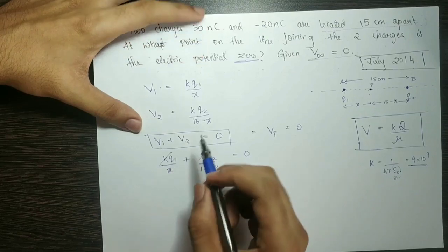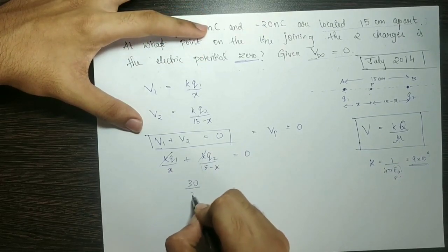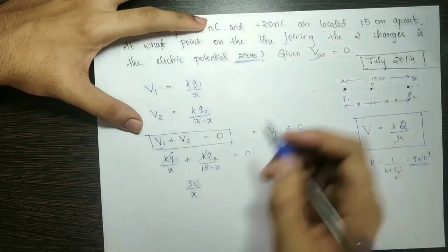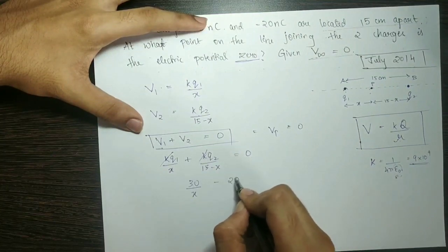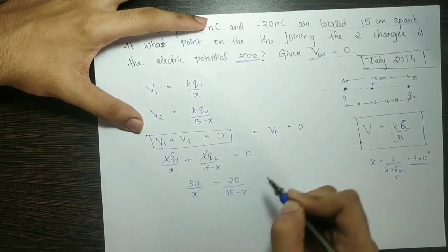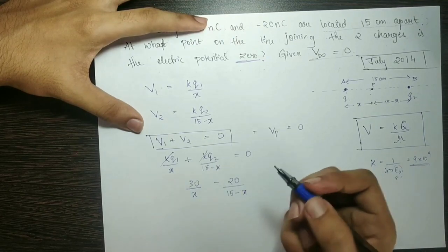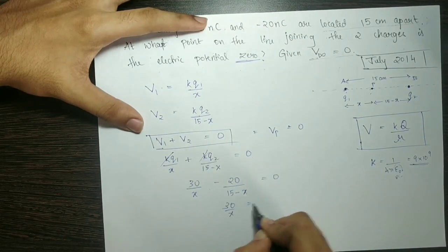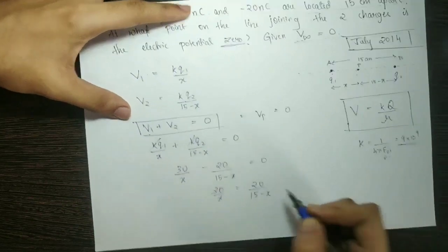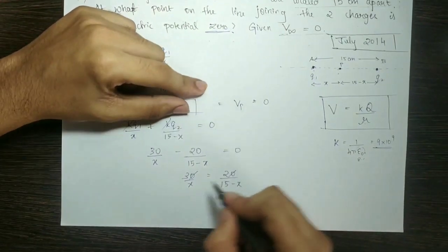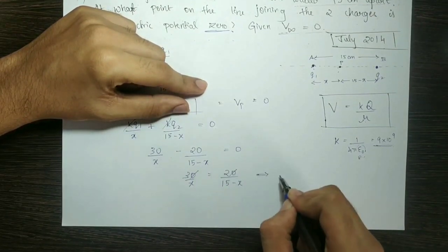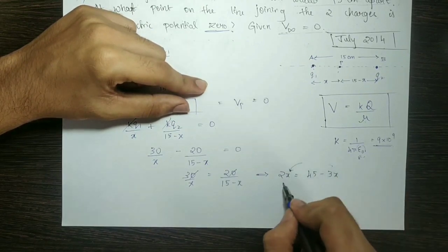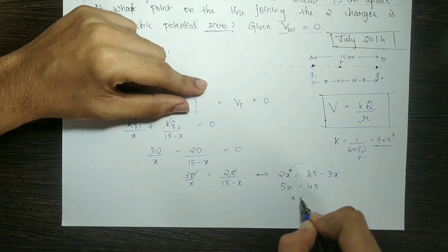Substituting Q1 equals 30 nanocoulombs: 30 divided by x. Q2 equals minus 20 nanocoulombs, so we get minus 20 divided by (15 minus x). The nanocoulomb units cancel. Setting 30 divided by x equal to 20 divided by (15 minus x), cross-multiplying gives 30 times (15 minus x) equals 20 times x, which simplifies to 450 minus 30x equals 20x, then 5x equals 45, so x equals 9 centimeters.